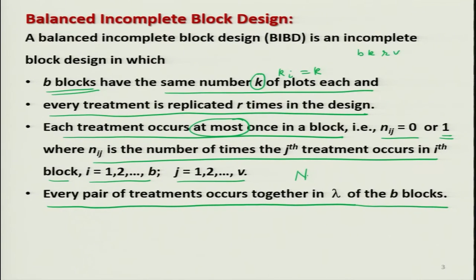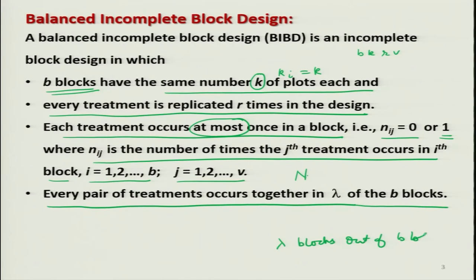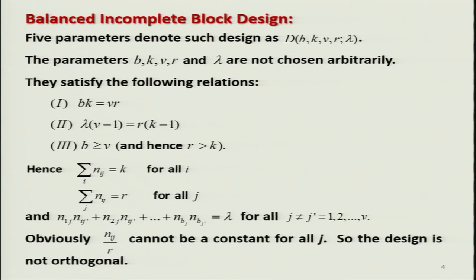What does it mean that every pair of treatments occurs together in lambda blocks? If you have V treatments — tau_1, tau_2, ..., tau_V — then if you take any pair of treatments, say tau_1 and tau_2, or tau_4 and tau_7, those two treatments are going to appear together in lambda blocks out of B blocks. These are the conditions for how treatments are assigned to blocks in balanced incomplete block design.